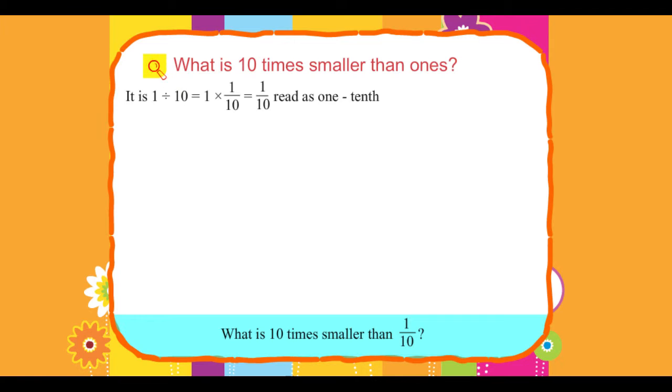What is 10 times smaller than 1 upon 10? It is 1 upon 10 divided by 10 equals 1 upon 100, read as one hundredth.